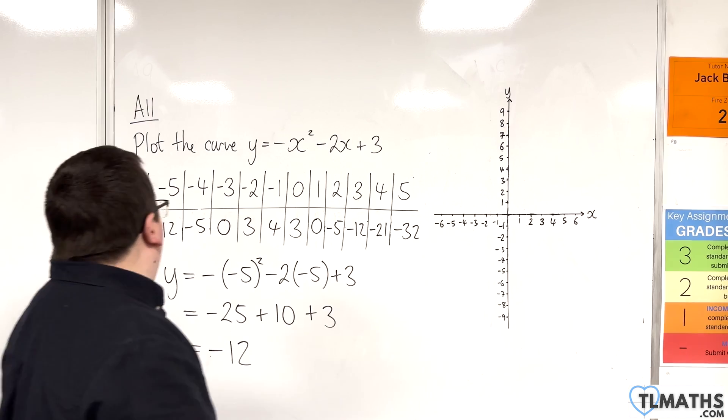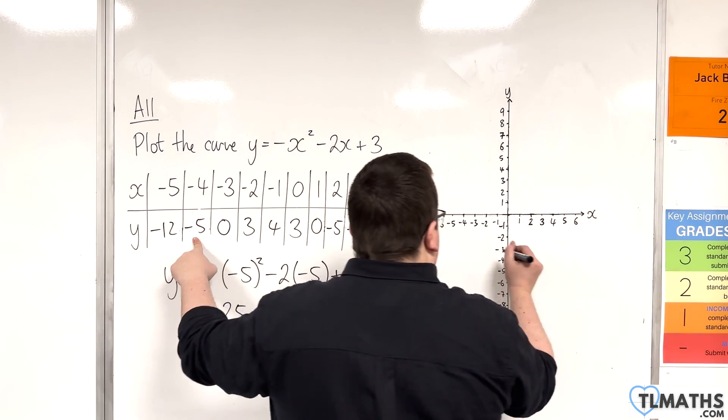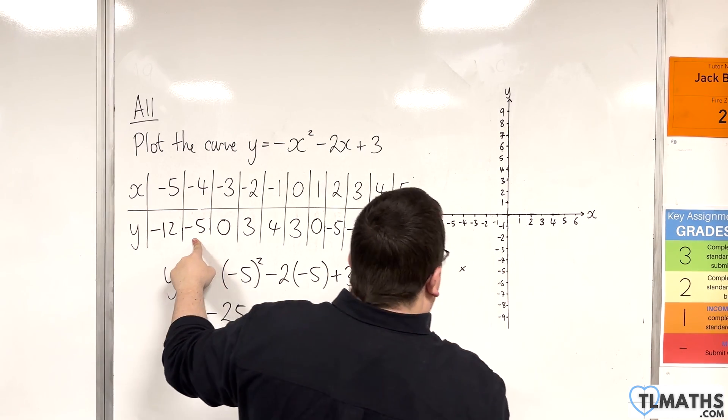So let's start plotting these points. Minus 4 minus 5 I can do. So minus 4 minus 5, about there.